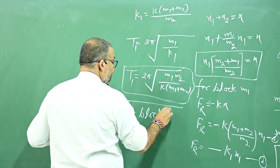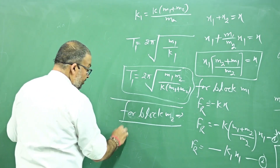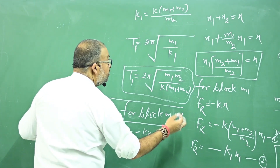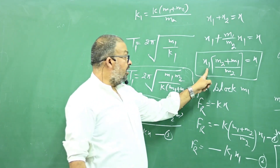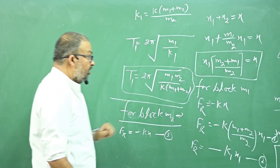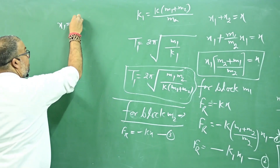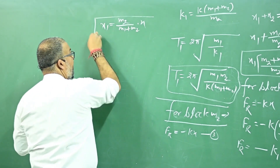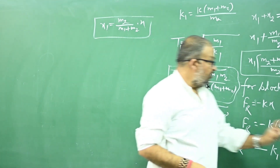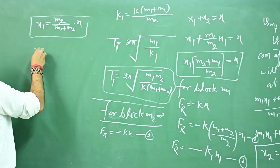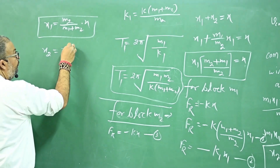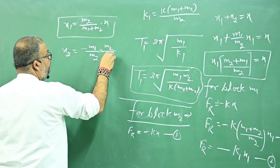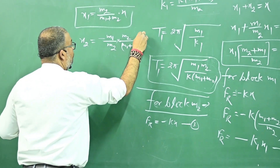For block M2, the restoring force is minus kx. Now we need to express x in terms of x2. We found x1 = M2/(M1+M2)·x. Since x2 = (M1/M2)·x1, the magnitude of x2 = M1/(M1+M2)·x, so x = (M1+M2)/M1 · x2.